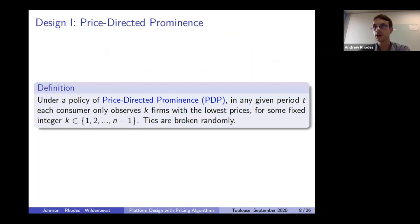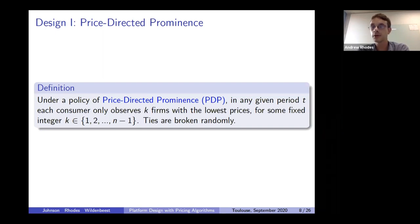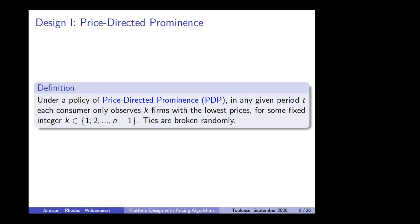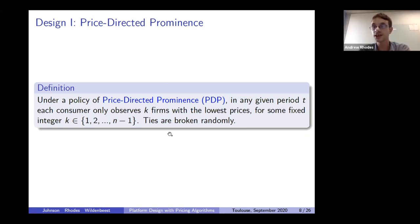I'll now introduce two different design features. The first is called price directed prominence, or PDP. Under PDP, in any period, the platform simply picks K firms with the lowest prices and displays only those to consumers. If there are any ties for the K lowest price, they are broken randomly. In this stark theory version, once we've picked those K firms, the other N minus K firms are discarded and consumers are unable to choose them.